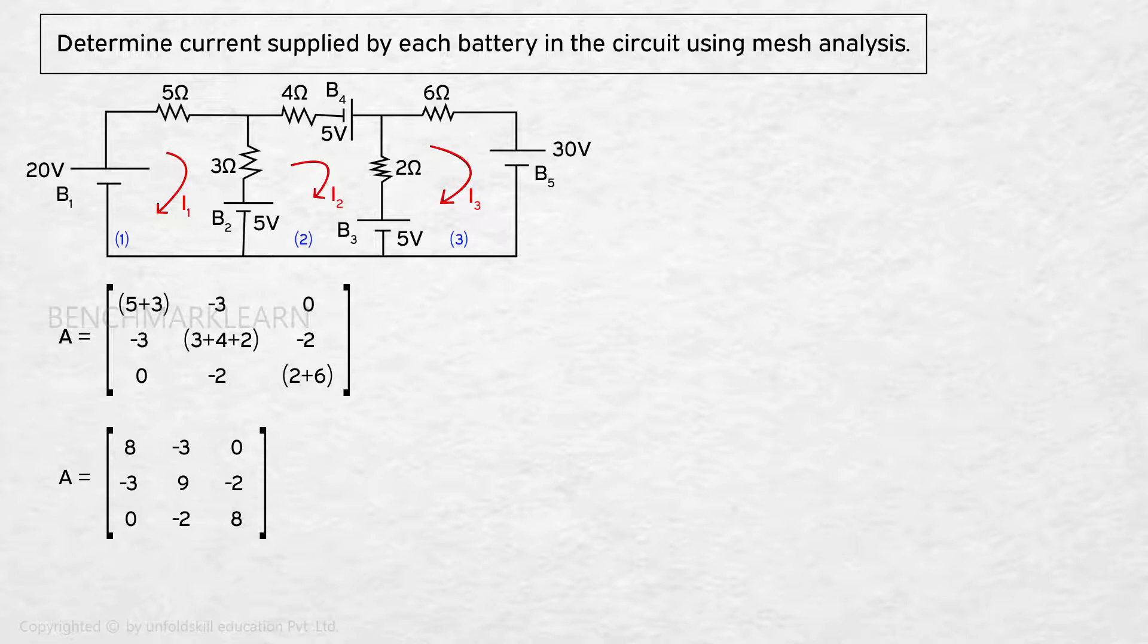The circuit variable matrix X is given by matrix X equal to I1, I2 and I3.